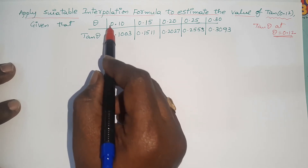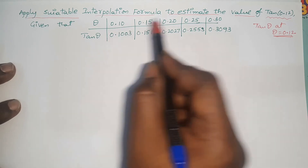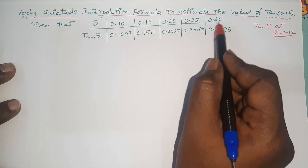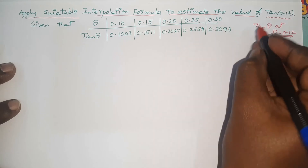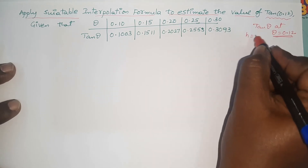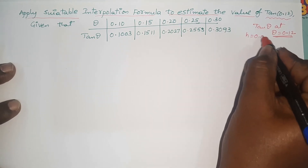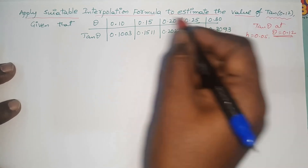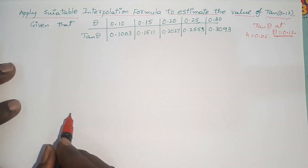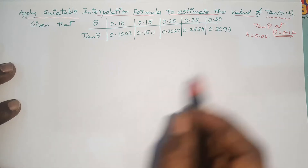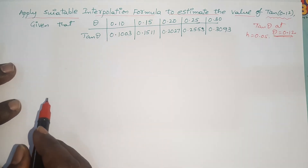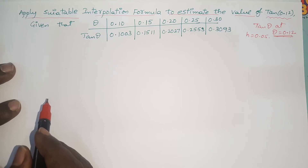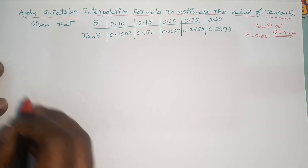Theta is given from 0.10 to 0.30 with equal spacing h = 0.05. The given data has equal parts, and theta lies at the starting of the data. That is why Newton's forward interpolation formula is suitable.